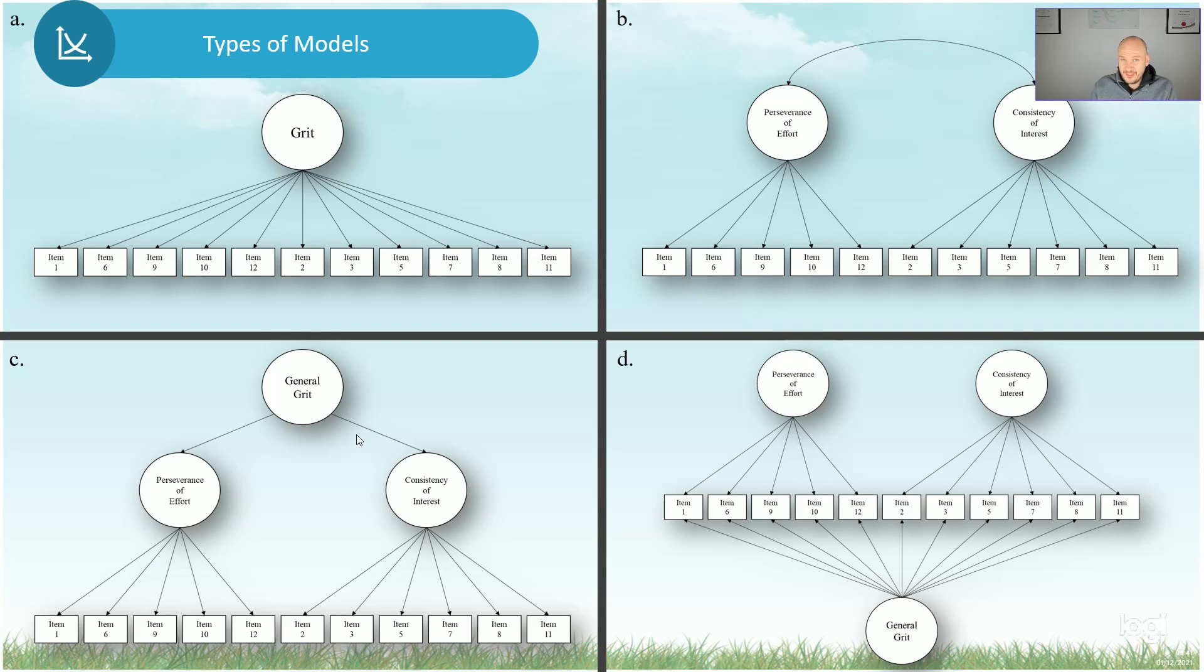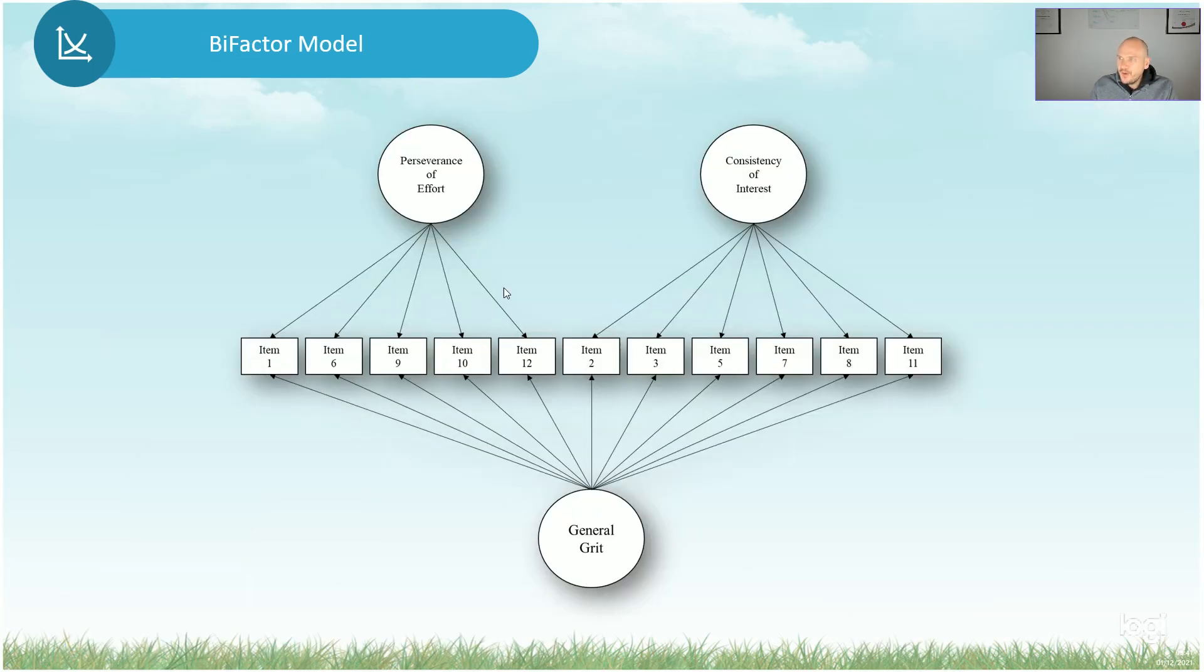However, recently it was indicated or suggested that maybe GRIT is not a function of perseverance of interest and effort, not a hierarchical model, but maybe it's a bifactor model. Now, what is a bifactor model? A bifactor model basically says that we are measuring by this one instrument an overall experience of GRIT. Because that's what the instrument measures. But when we control for GRIT, there should also be two other factors, because this is what the instrument says it measures: interest and perseverance. So what then happens is that GRIT, sorry, the two specific factors, which is perseverance and interest, is then the outcome of the variance or the leftover variance when we control for an overall experience of GRIT.